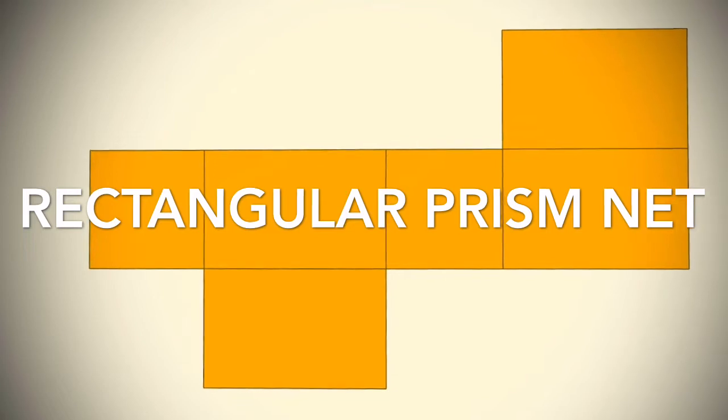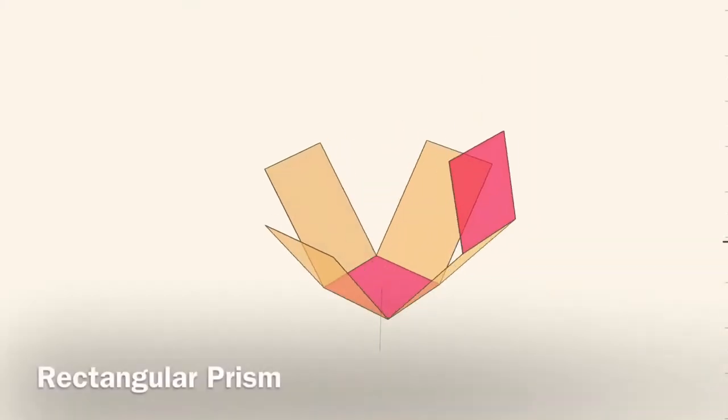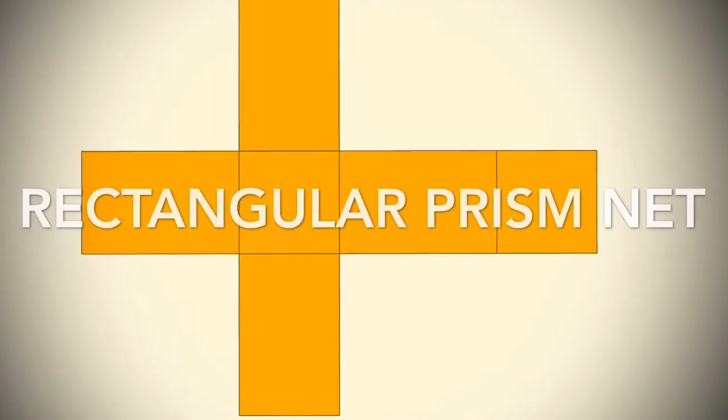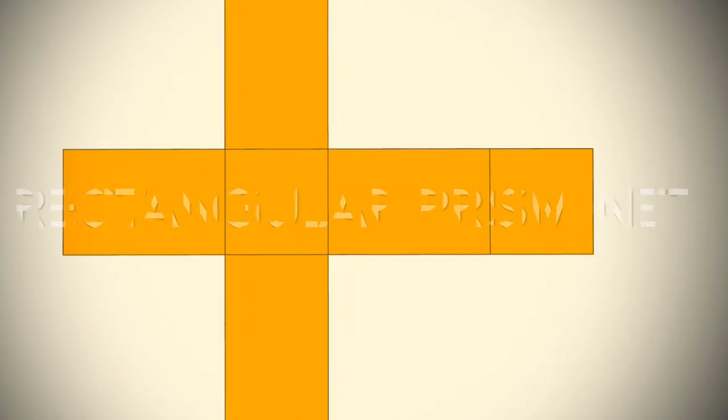You'll notice that there are still 6 rectangles and in fact they form pairs. Here again is the same rectangular prism with a completely different net. But it has the same shapes.